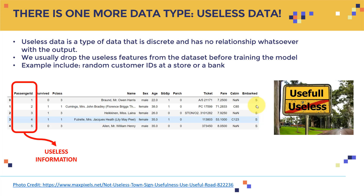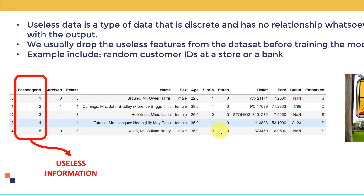There is one more category I really like to include here because it's very important to notice: useless data, or unnecessary irrelevant data. Useless data is a type of data that is discrete and has no relationship whatsoever with the output. We usually drop useless features from the dataset before training the model. For example, consider a dataset used to predict whether Titanic passengers would survive or not. You can see there is a passenger ID column and a survived target label — zero means they drowned, one means they survived.